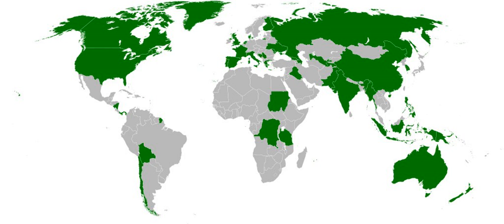British Overseas Territories and Crown Dependencies: Jersey, Guernsey, and the Isle of Man are self-governing Crown Dependencies which are not part of the United Kingdom; however, the UK is responsible for their defence and international affairs. Gibraltar is a self-governing Overseas Territory of the UK. Most of the other 13 British Overseas Territories also have autonomy in internal affairs through local legislatures.